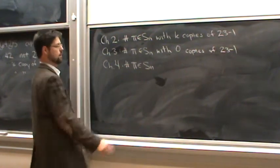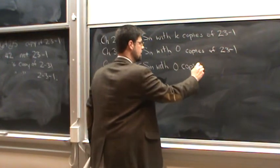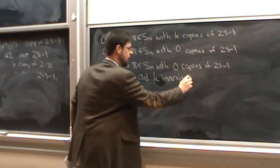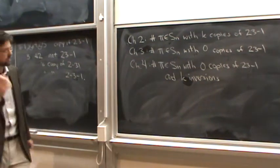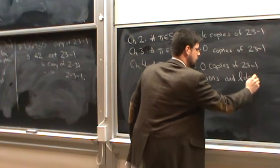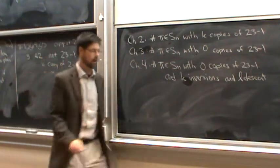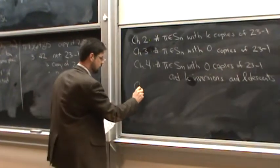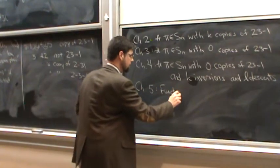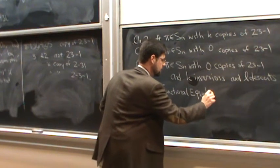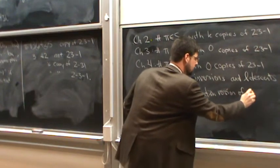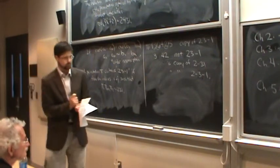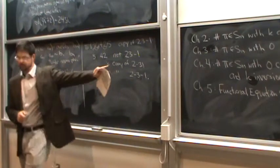Chapter 4 tells you number of pi in S_n with zero copies of 2, 3-1 and k inversions, which I'll define. This is a statistic of permutations about disorder, and l descents. So, you tell me other things that you're interested in about the permutations, and I can answer that question as well. And chapter 5 is a functional equation version of chapter 3, in short. It answers some of the criticisms of the techniques in chapter 3.